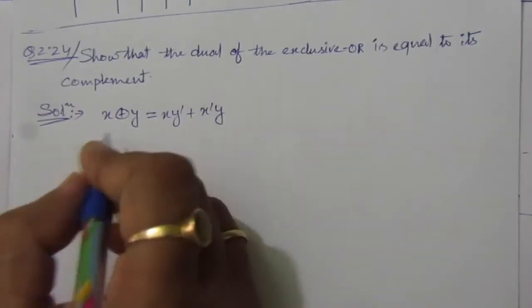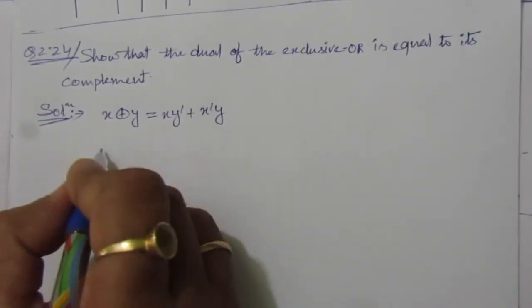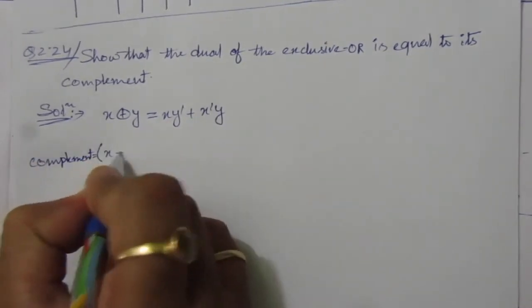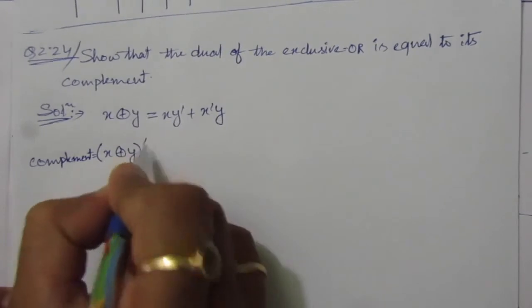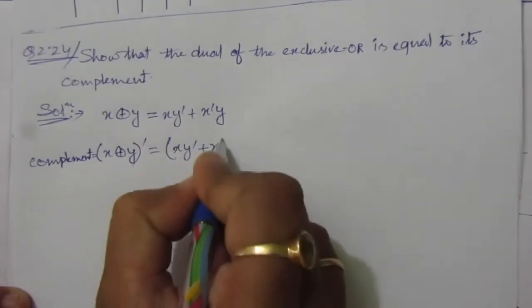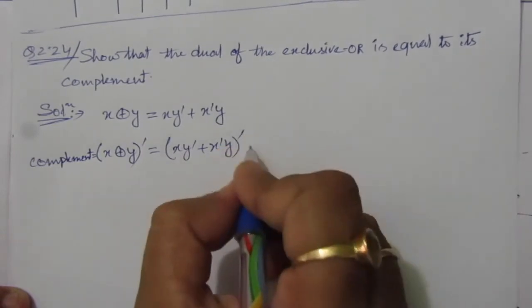First of all, we will find out the complement of this exclusive OR gate. So the complement equals x XOR y complement, which equals x y bar plus x bar y, the whole complement.